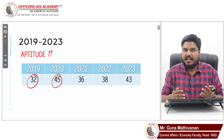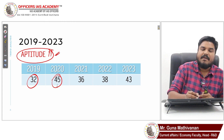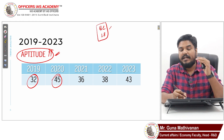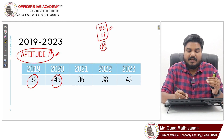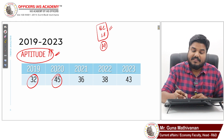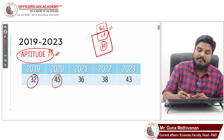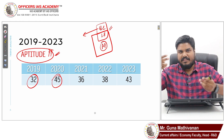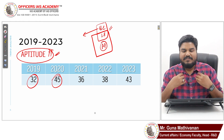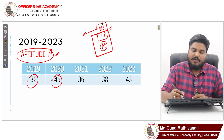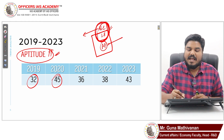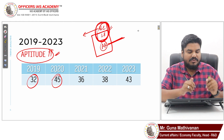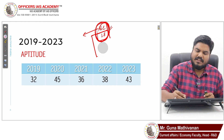Many students find reading comprehension and logical reasoning relatively manageable, but struggle with aptitude. Another set of students are fine with logical reasoning and aptitude but find reading comprehension difficult. So largely there are two sets of students. Whatever your strength and weakness, this analysis will give you a solution. The key question is: how many questions do you need to attempt?